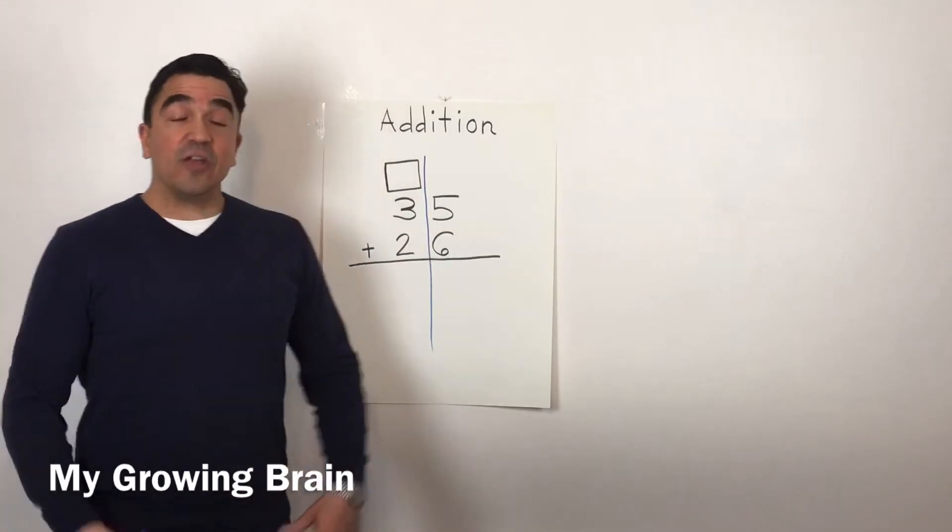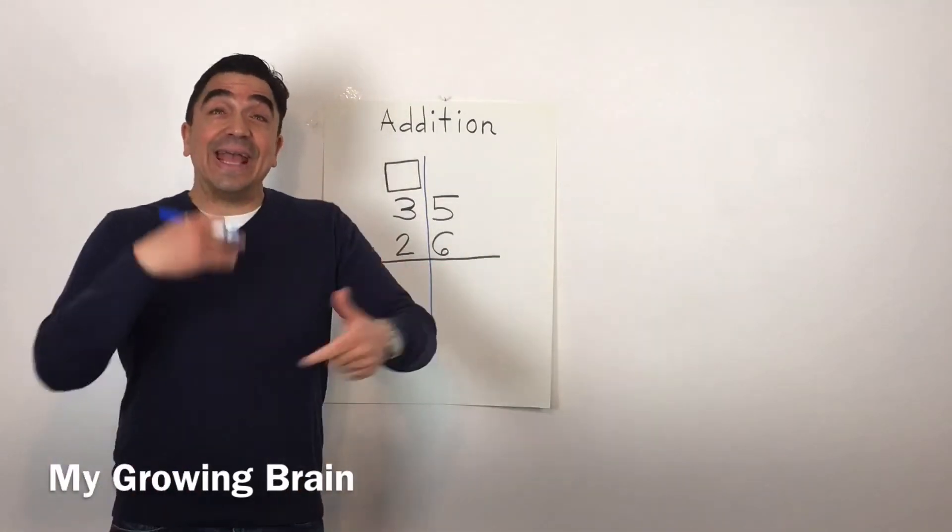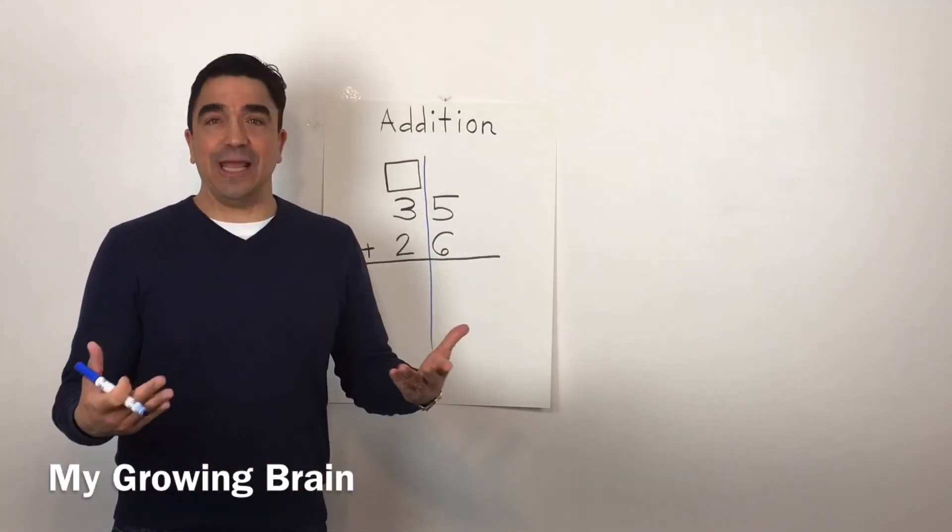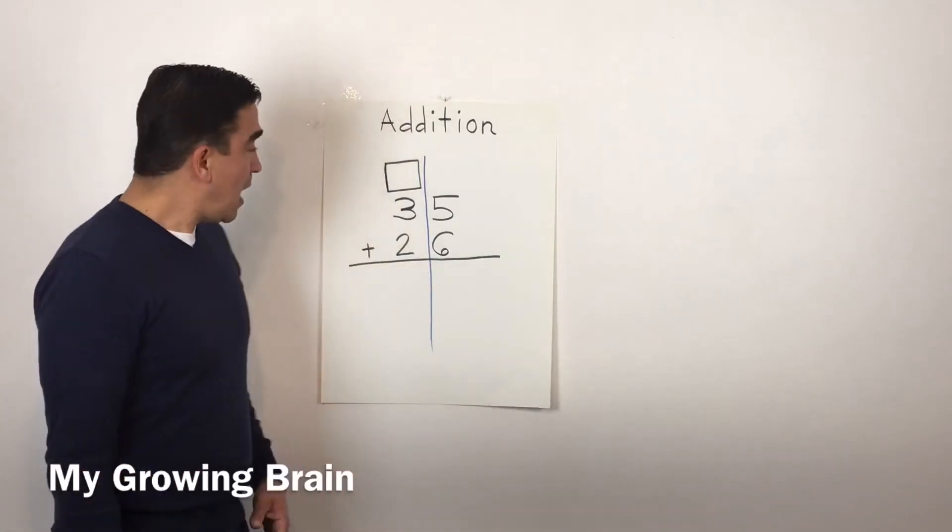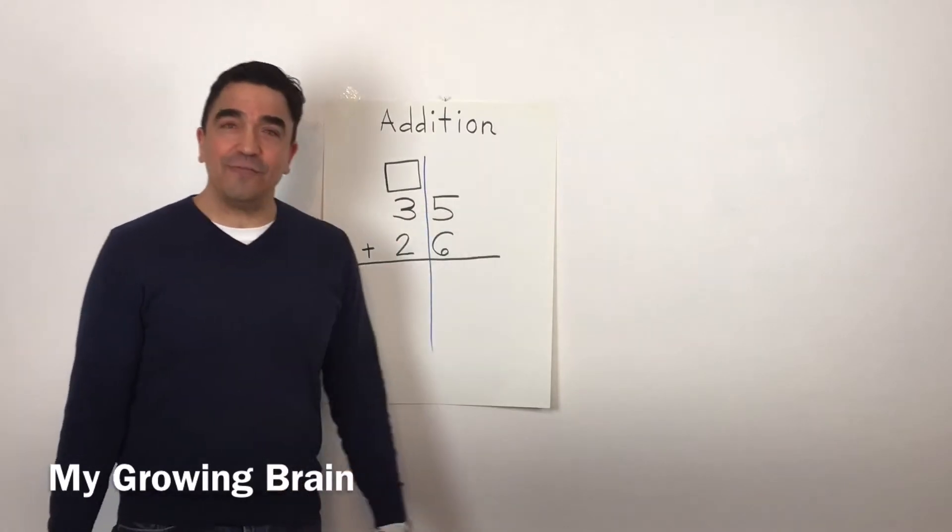Now, a strategy I like to do is to put the bigger number in my head and count on to get the answer. Watch. I'm going to take the six. I'm going to put it in my head and count on five.